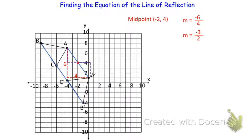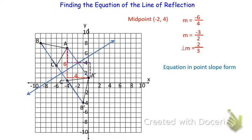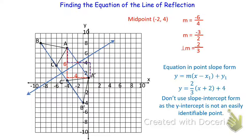The perpendicular slope for our line of reflection is the opposite reciprocal of negative 3/2. We flip and change the sign, giving us 2/3. The equation — with slope 2/3 passing through the midpoint (−2, 4) — is y equals 2/3 times the quantity (x minus negative 2), which becomes (x plus 2), plus 4. Notice the y-intercept is not a clean coordinate, so in this case we wouldn't want to use slope-intercept form. We keep it in point-slope form because we know it passes through (−2, 4).